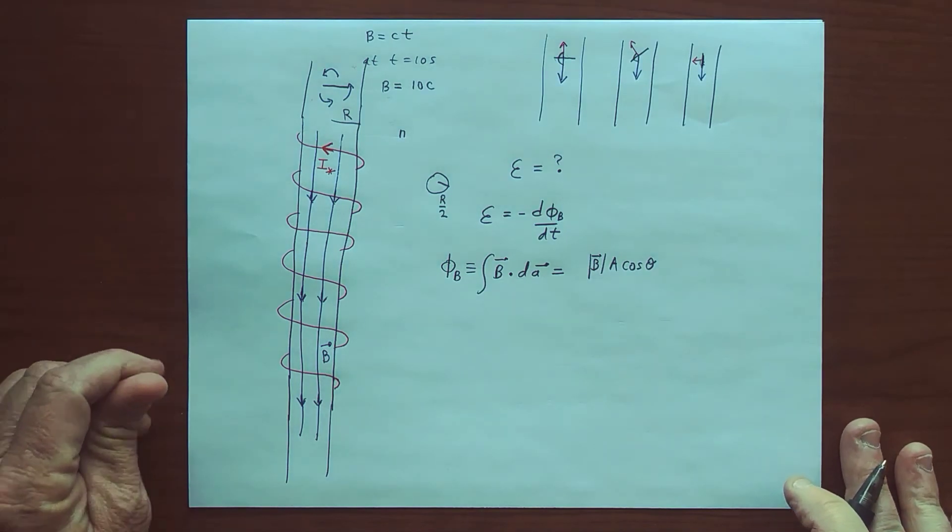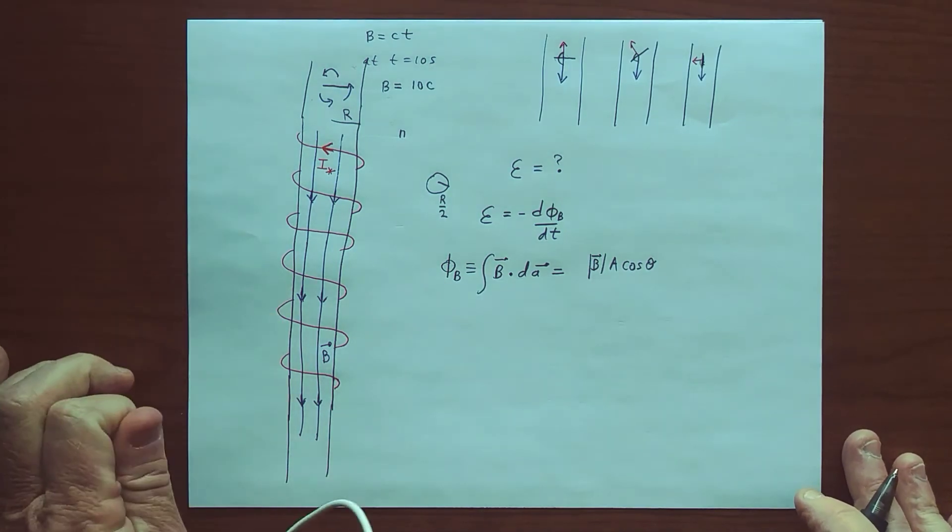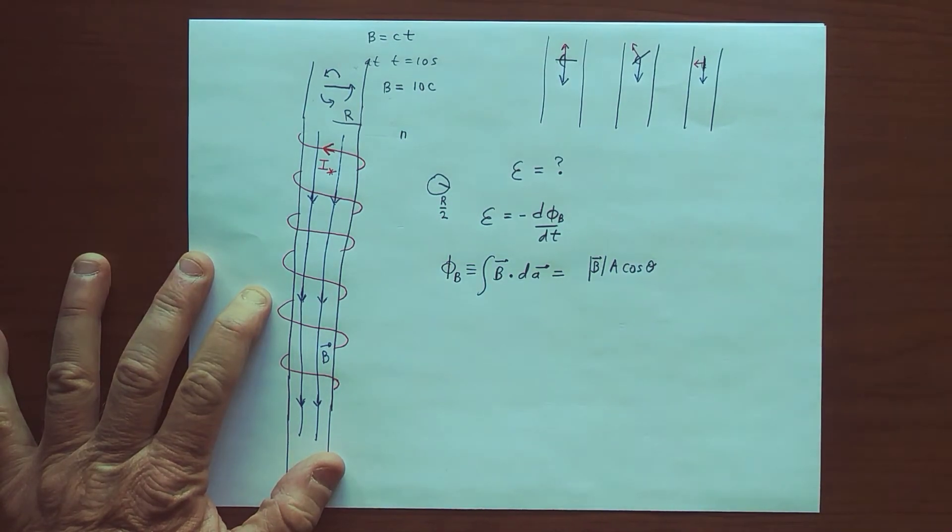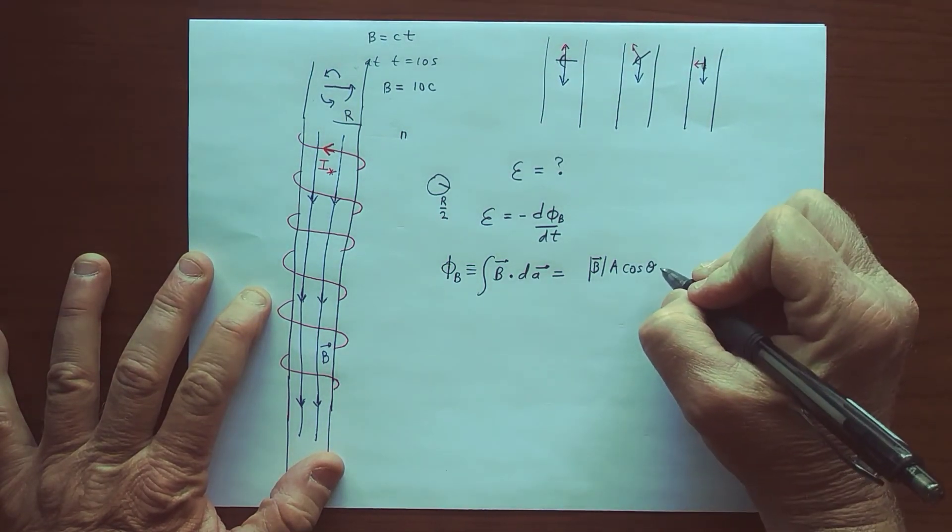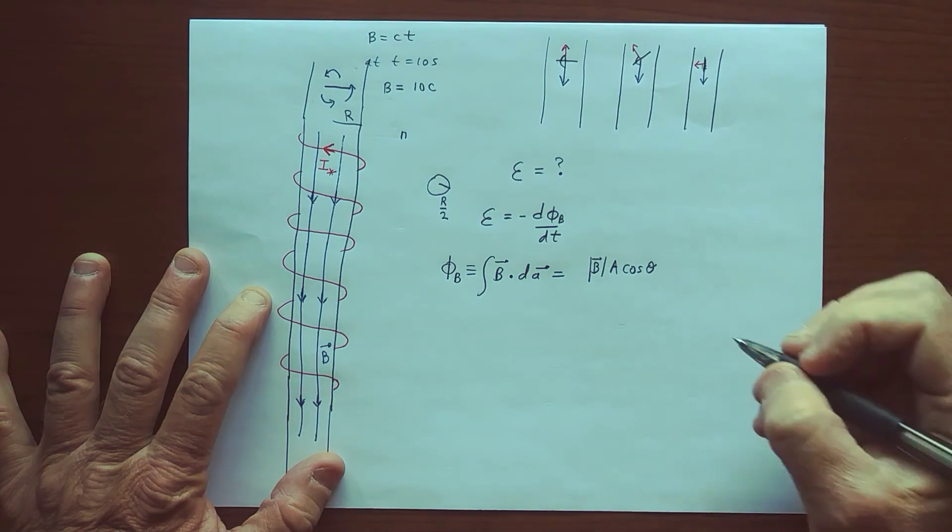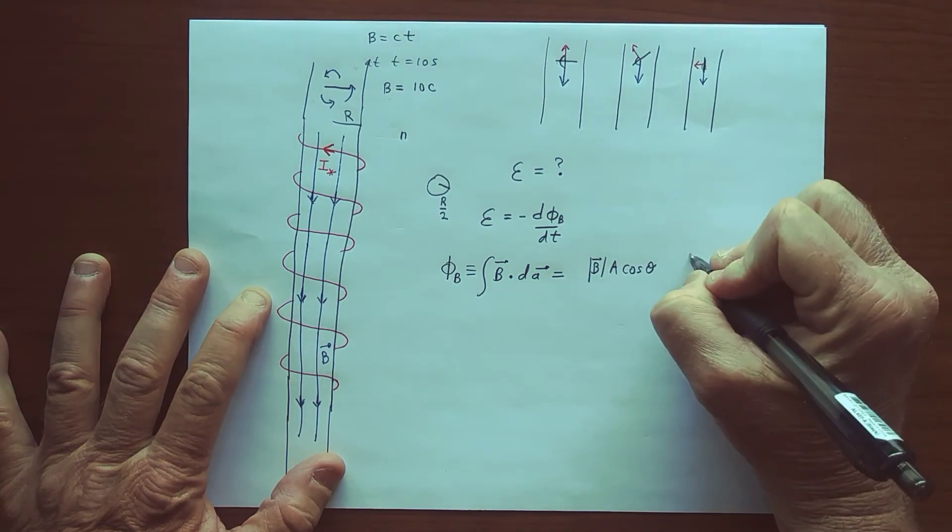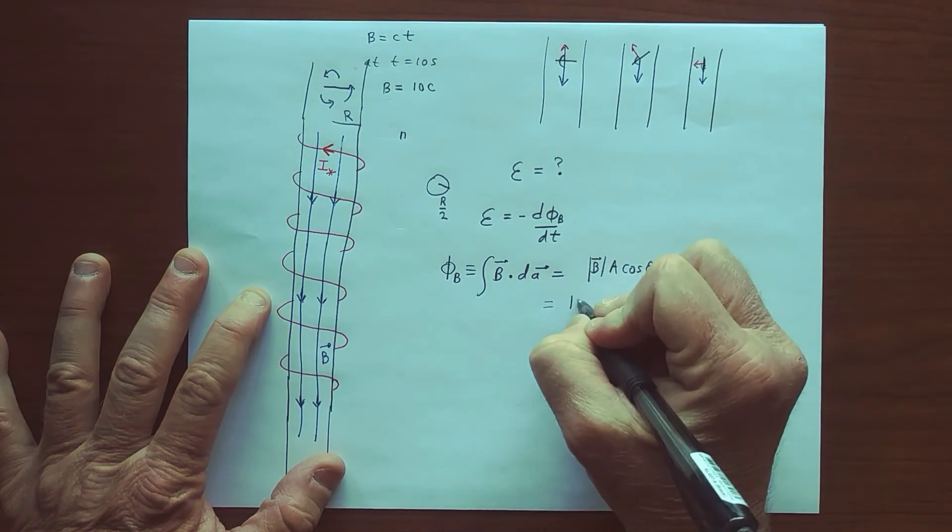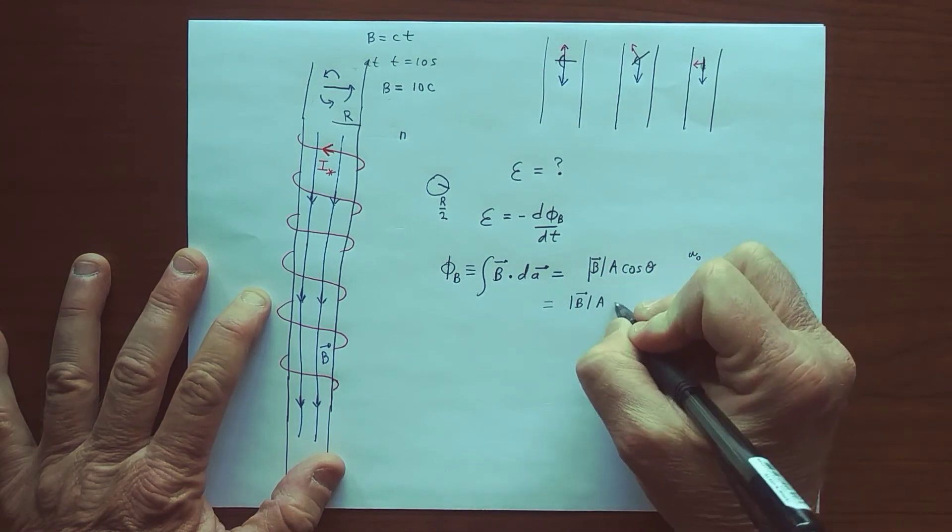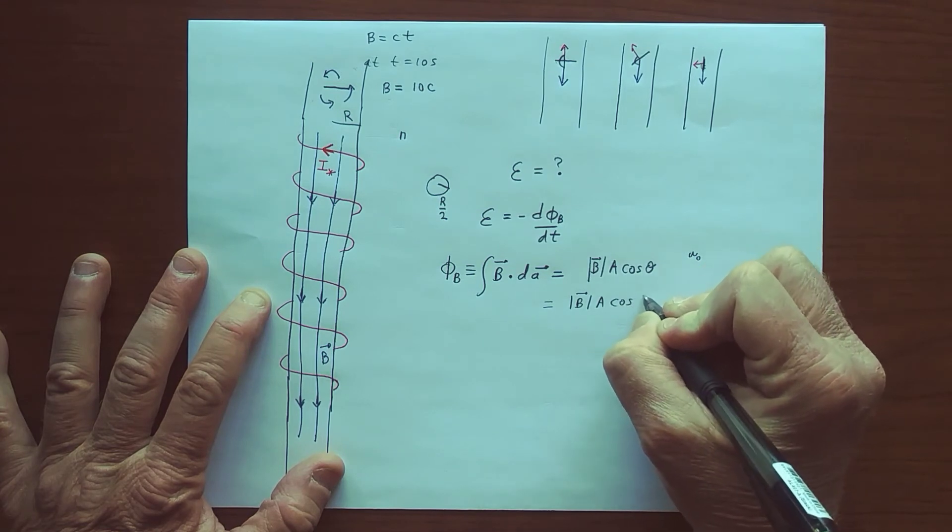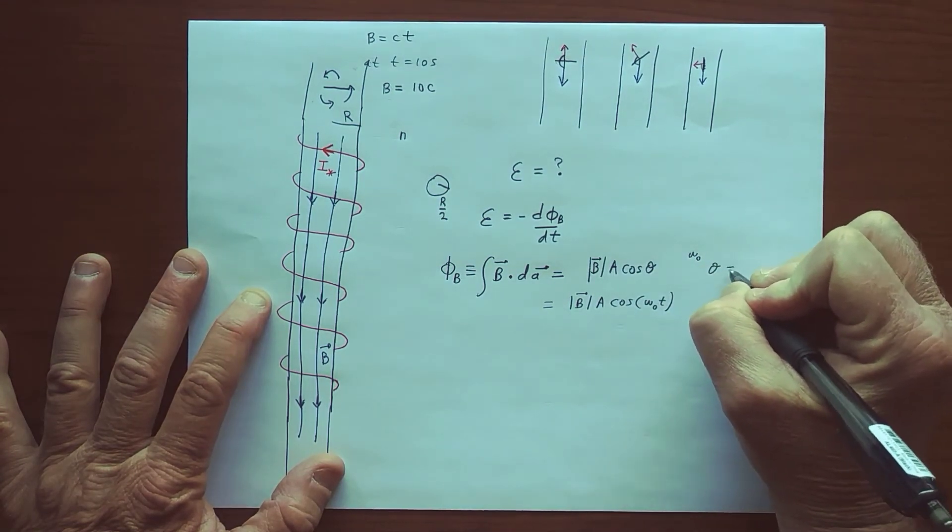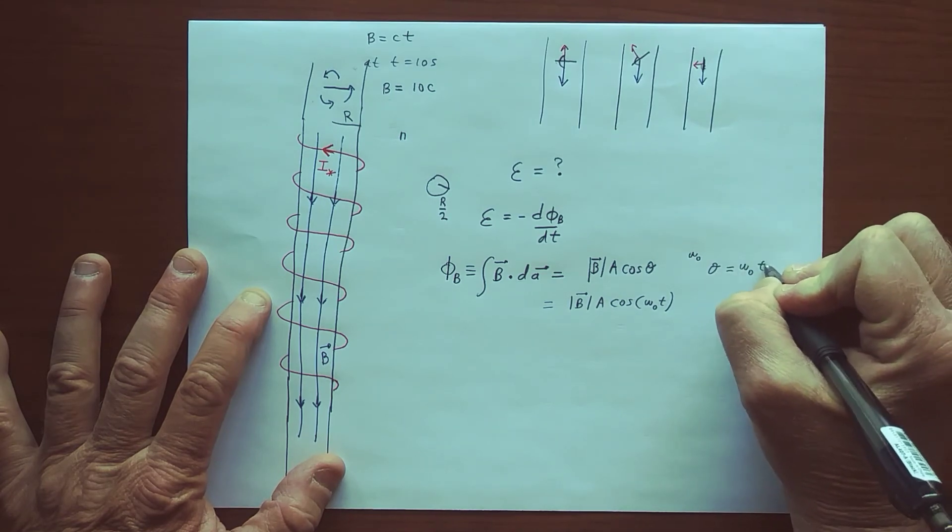And it's just, therefore it's changing with time. And if we have it rotating at some angular velocity omega, let's say omega naught, then this becomes the magnitude of the magnetic field times the area times the cosine of omega naught times t, where theta is equal to omega naught times t.